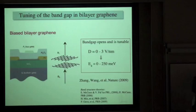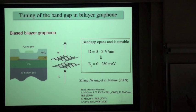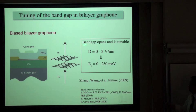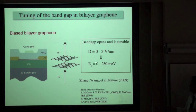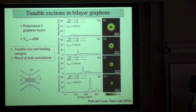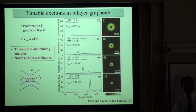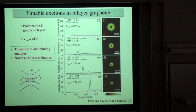Bilayer graphene is a semi-metal, but when you apply a transverse electric field, it can be made into a semiconductor with a bandgap tunable from 0 to about a quarter electron volt. This is very exciting because you can tune the gap of a material just by turning a knob. This means you can have tunable excitons in the system, and as you increase the applied field and thus the gap, the size of the exciton becomes smaller.